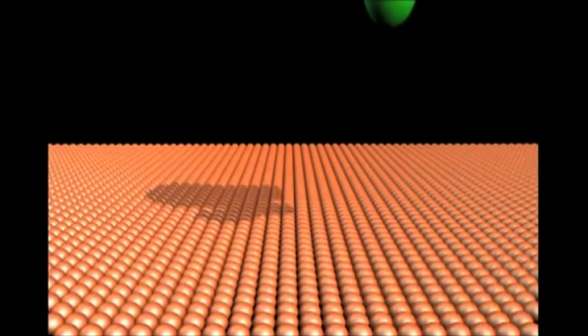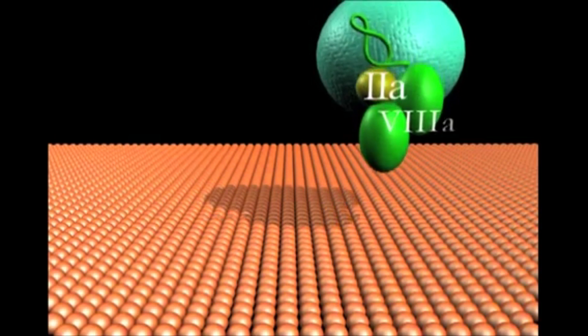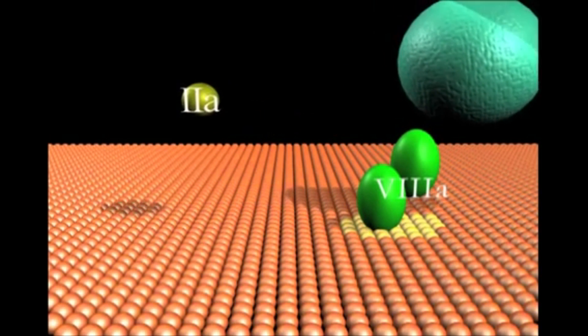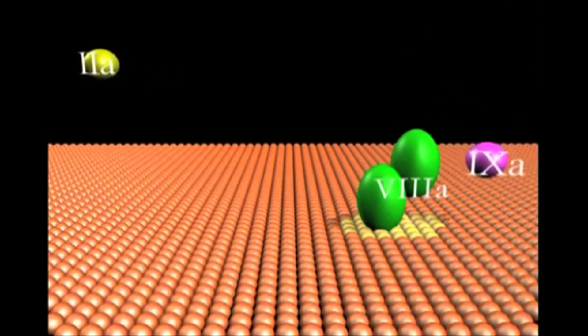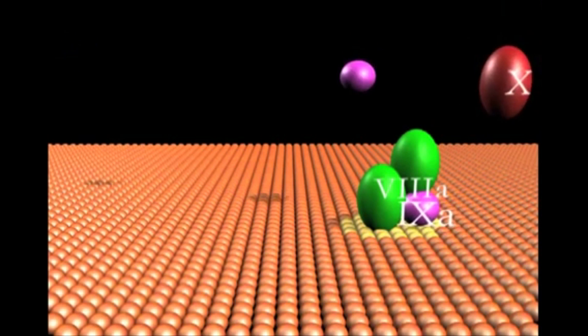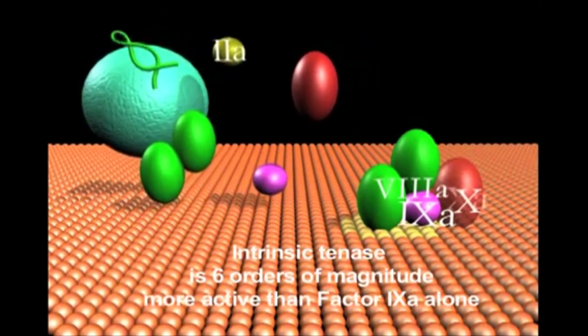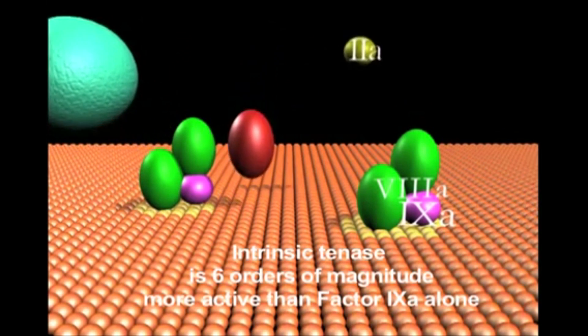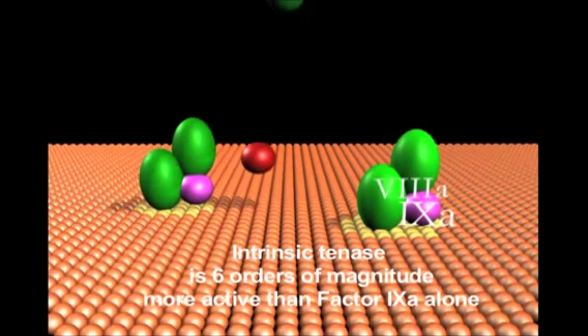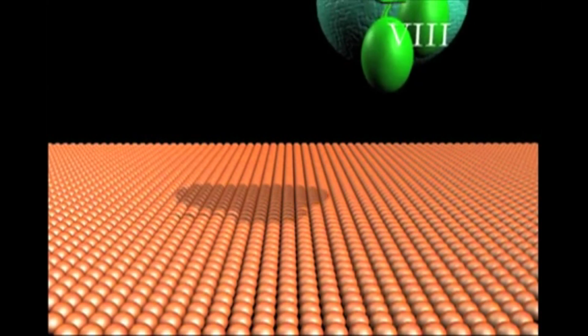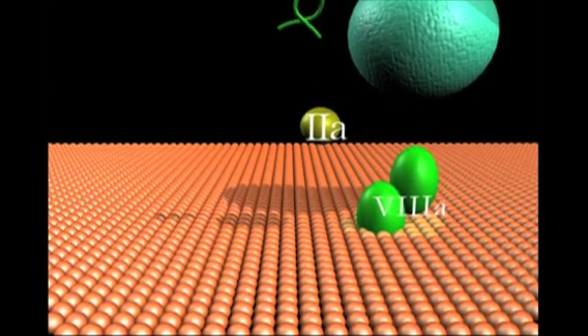Platelet membrane-bound factor 8a accumulates factor 9a produced by the TF factor 7a complex to form the intrinsic factor 10a complex. This complex is six orders of magnitude more active than factor 9a in factor 10 activation. It rapidly activates more factor 10 to factor 10a.